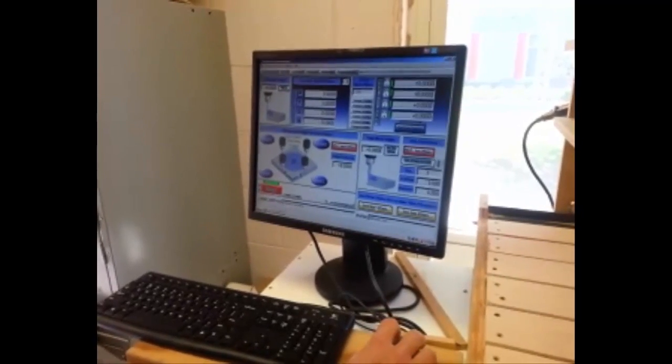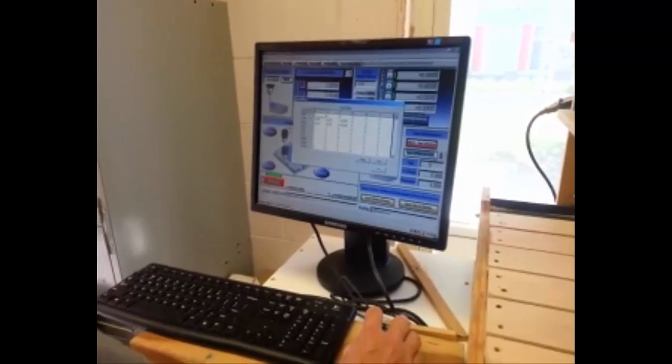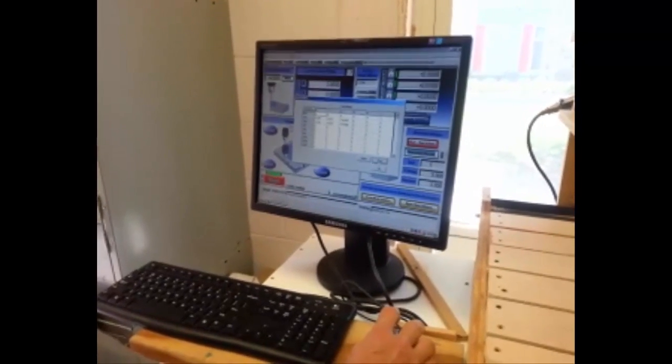We go to offsets. We'll come down here to save offsets. Select. Again, we're using G54, the system control offset. Hit save. Okay.